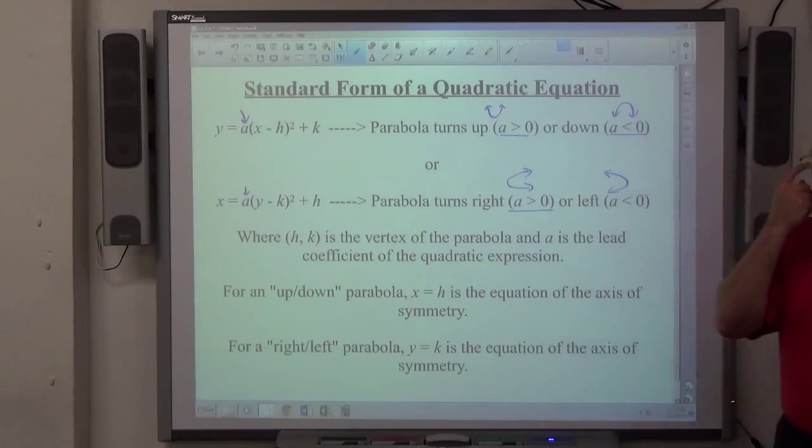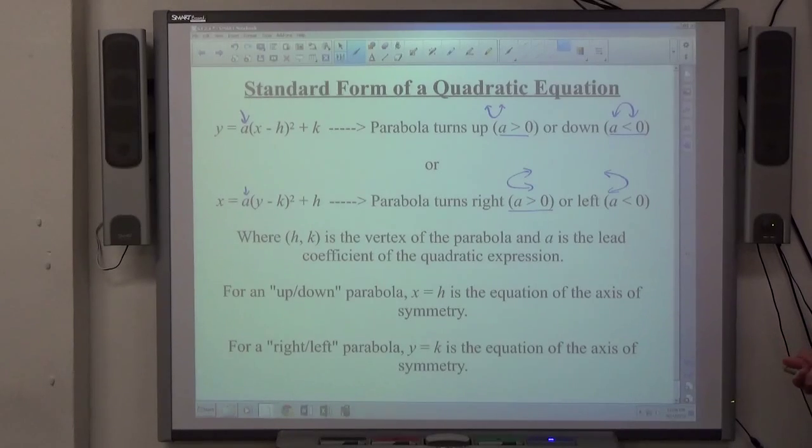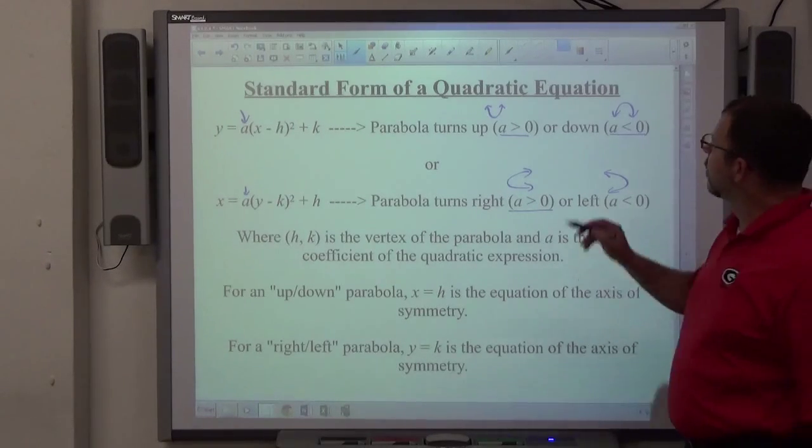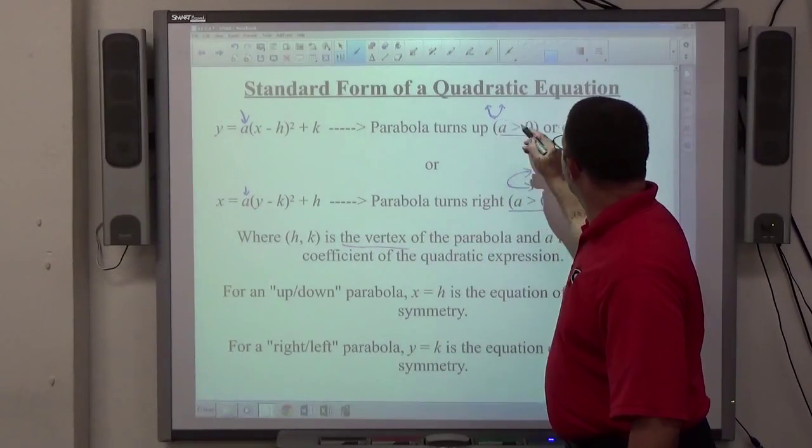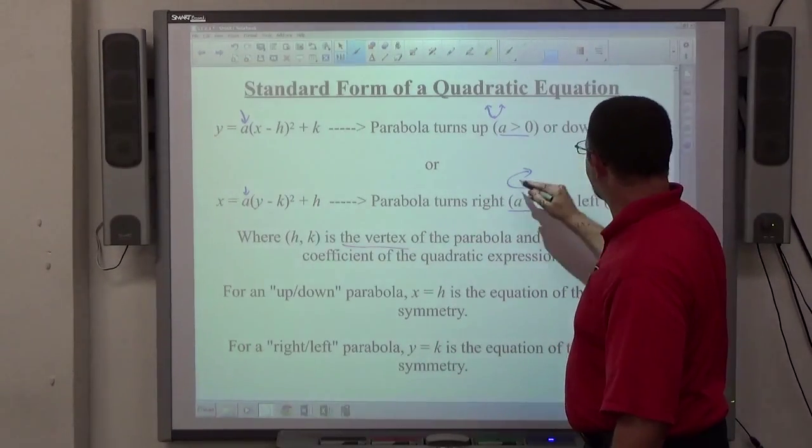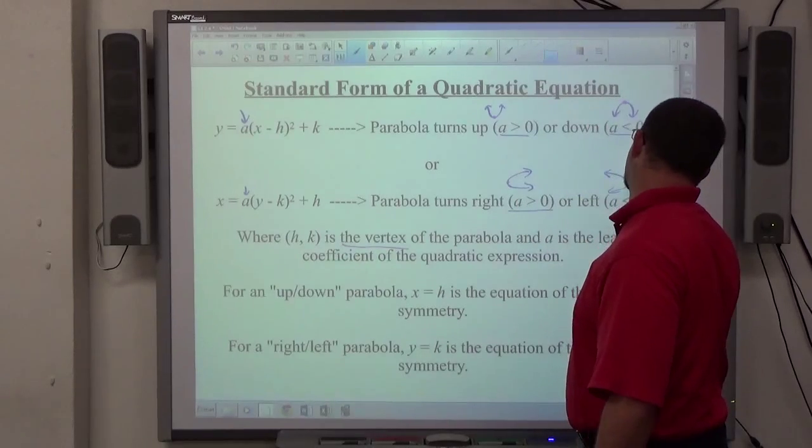So everyone makes the same shape, it's just which direction it turns. Every time hk is the vertex, the vertex would be the lowest point of the parabola, or the highest point, or the furthest left point, or the furthest right point of the parabola.